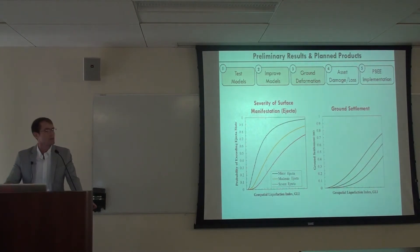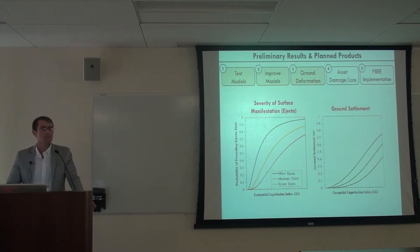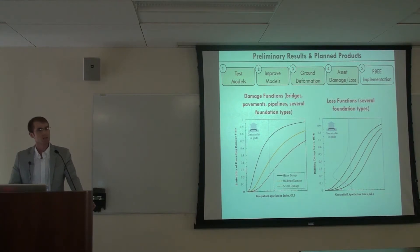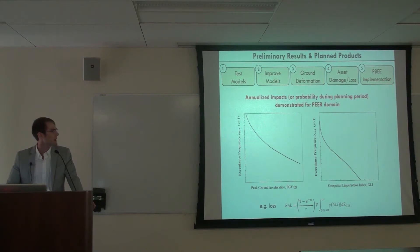Taking these improved models, we're now moving on to using them to predict ground settlement and the severity of ejecta by way of fragility functions — a practical proxy of damage when you don't have asset-specific performance information. When we do have asset-specific data, we're developing fragility functions for roads, pavements, pipelines, and specific types of foundations. We also have insurance data specific to buildings on particular foundation types to develop loss functions. Finally, we'll implement these functions in the performance-based framework, convolving them with seismic hazard to compute annualized effects or annualized loss.